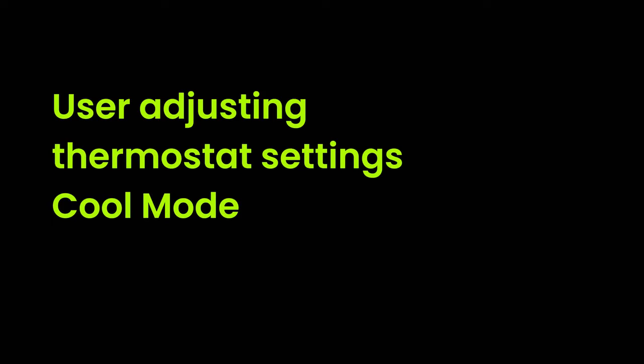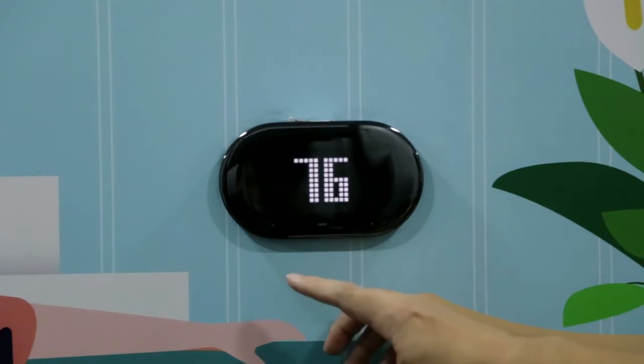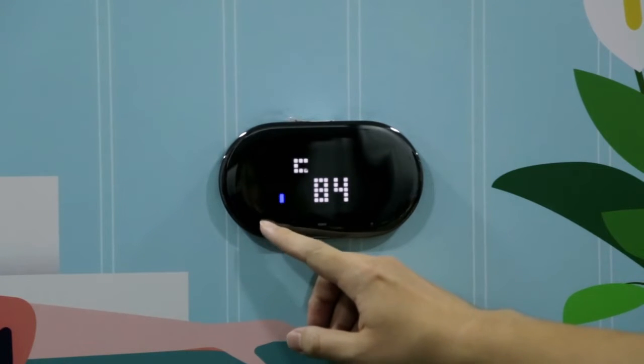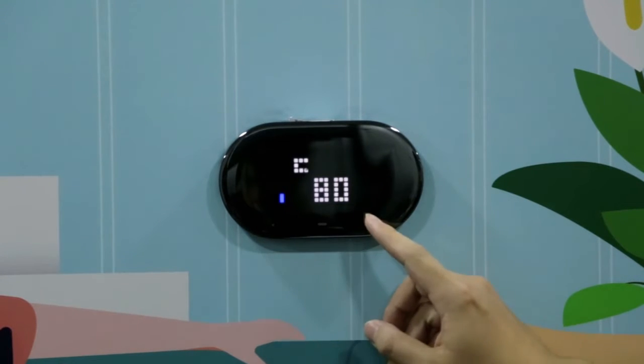However, if you are using Cool mode, simply click the right or left button to access the cool setpoint. Use the left button to decrease and the right button to increase.